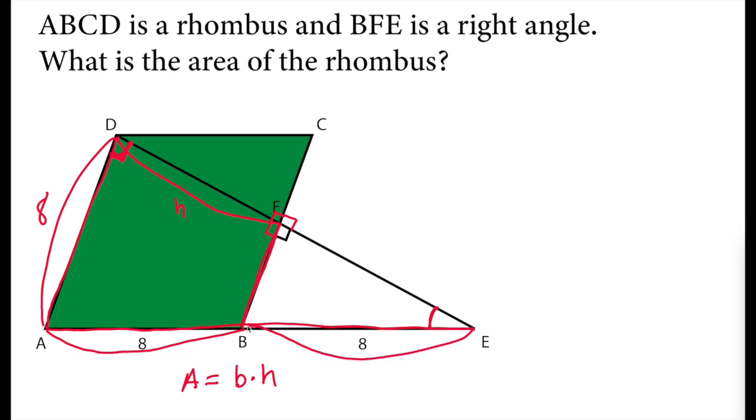So this side length is similar to this long side length and this side length here is similar to this side length here, which is half of it. This side length right here must be similar to this whole side length.